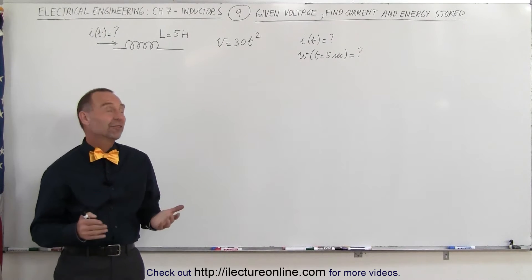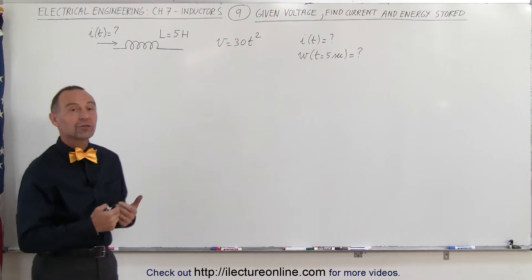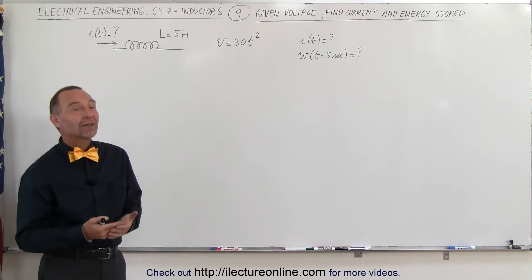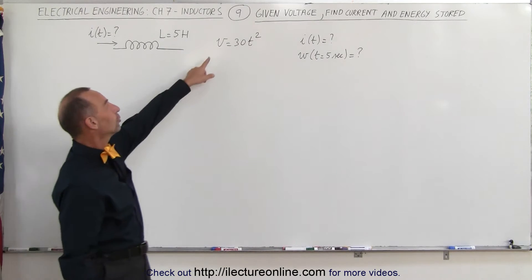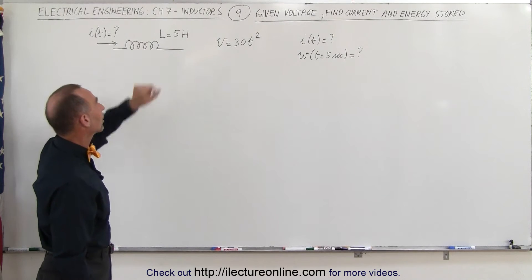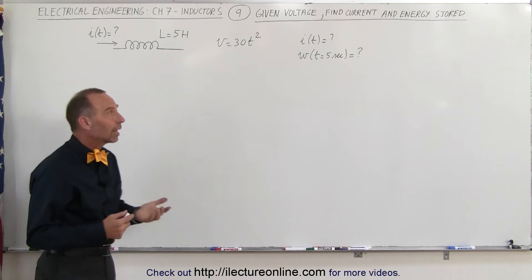Welcome to ElectronLine. In this video we're asked to find the current as a function of time and the energy stored in the inductor after five seconds given that the voltage is equal to 30t squared. The inductor has an inductance of five Henry's. How do we do that?